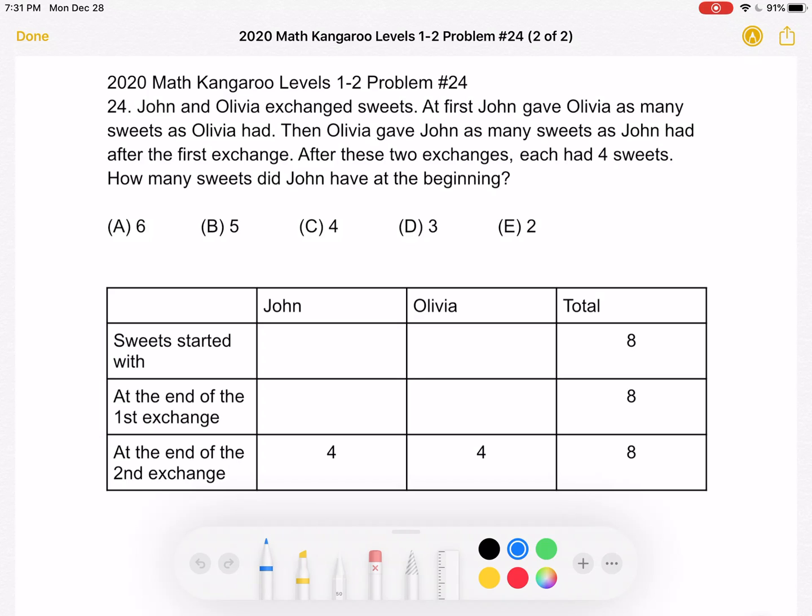To start, we know that after the two exchanges, each has four sweets. So John will have four and Olivia will have four. And we have a total of eight sweets. And this number eight will stay the same throughout all the different exchanges. They always will have a total of eight sweets.